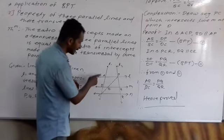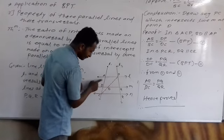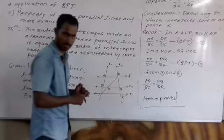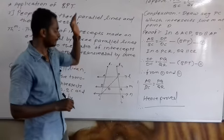So, in triangle ACP, BD parallel to AP. Therefore, AB upon BC equals DP upon DC by BPT theorem, equation number first.